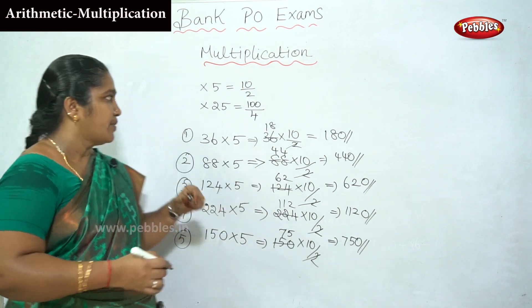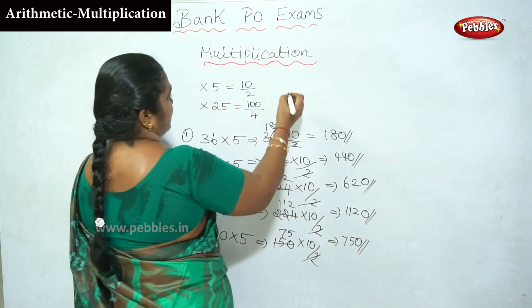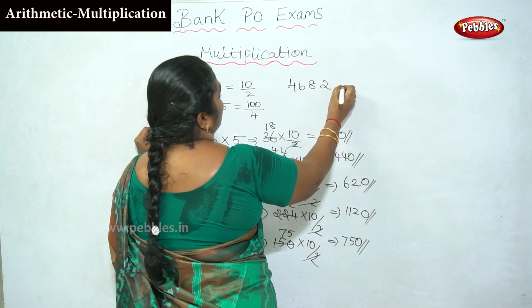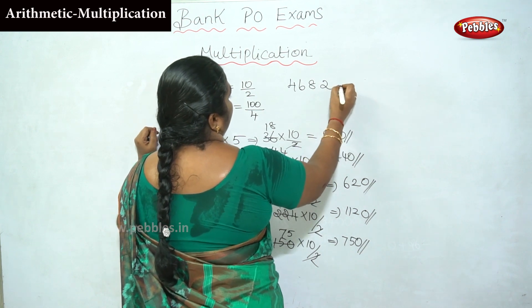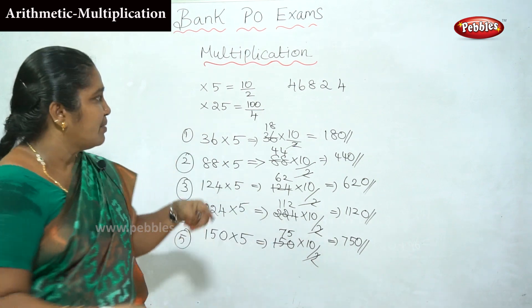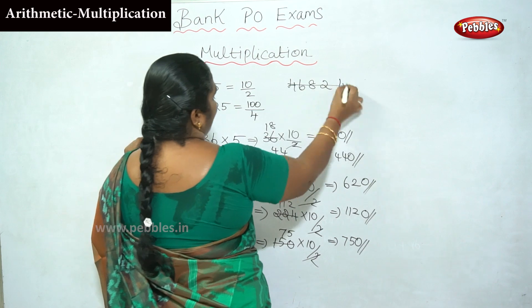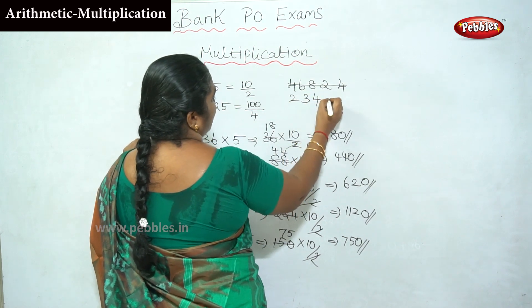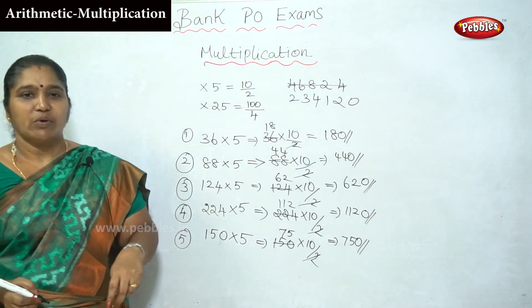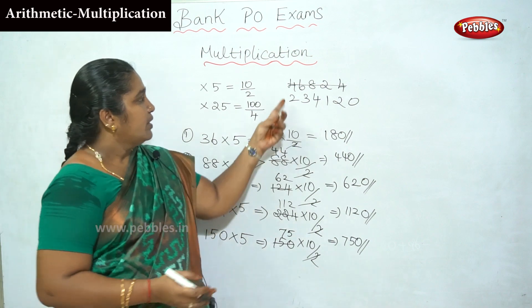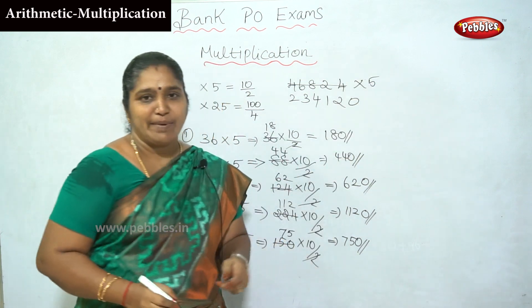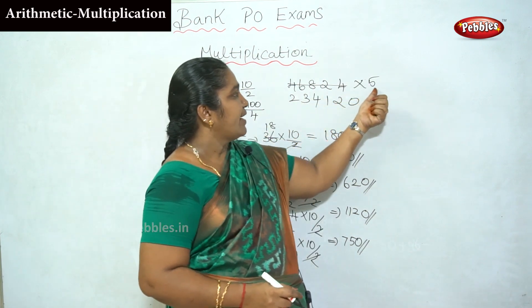Now, easy calculation. For example, 146824 into 5 — you can multiply 5 using this method. Simple: take the half of the number. 146824 divided by 2 gives 73412, then add zero.